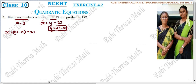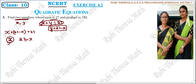So if we assume the first number is X, then the second number is represented in terms of X. X plus Y equals 27, so Y equals 27 minus X. If one number is X, to find the other number subtract the first number from the total. So 27 minus X is the other number.